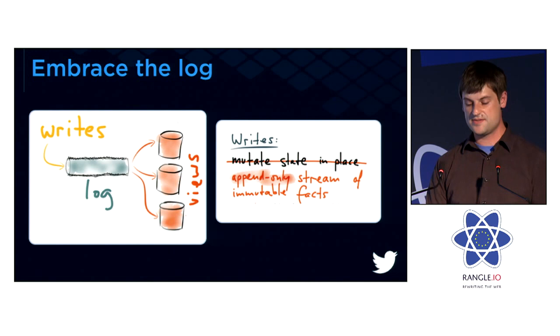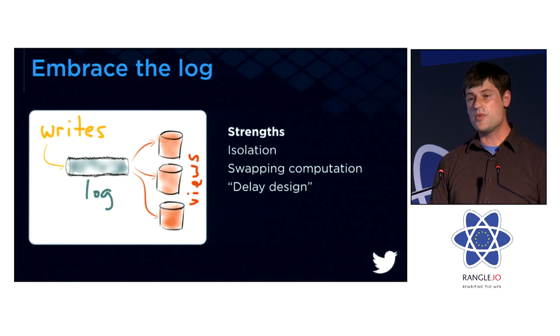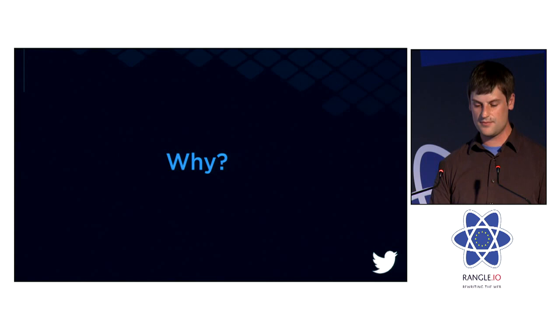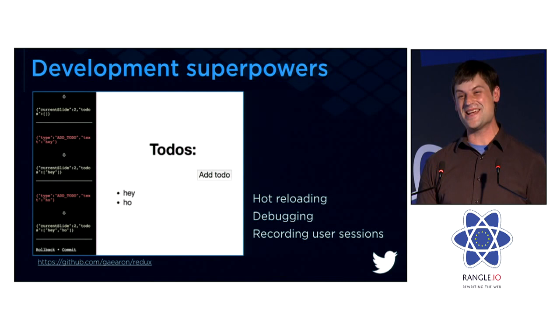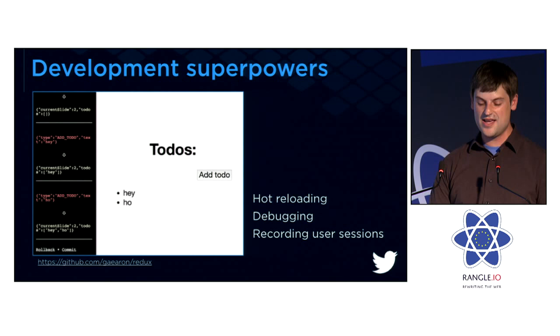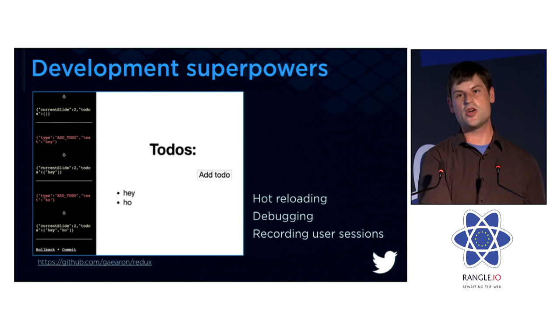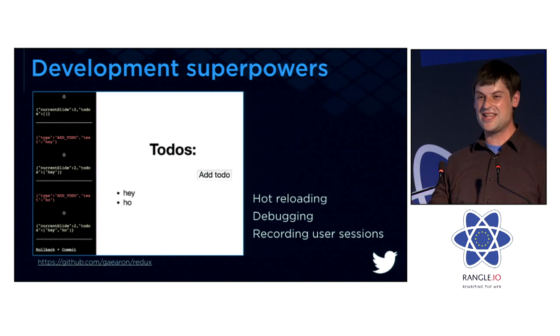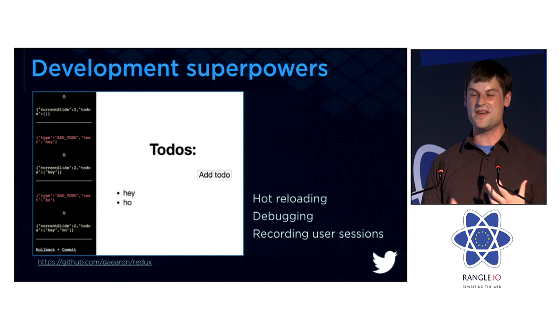For the backend, this gives us a lot of strengths: isolation between different computations that can't interact with each other, and the ability to swap out computation and retroactively apply new computation. As Michael said in his CSS talk, this really embodies the idea of delaying design — we can add any computation we want later. Dan gave as compelling a demonstration as anyone can give about how this matters for development. The monitor component he talked about is essentially a log — keeping a record of everything rather than letting it flow through the dispatcher. This enables hot reloading, debugging, and the ability to debug user sessions.